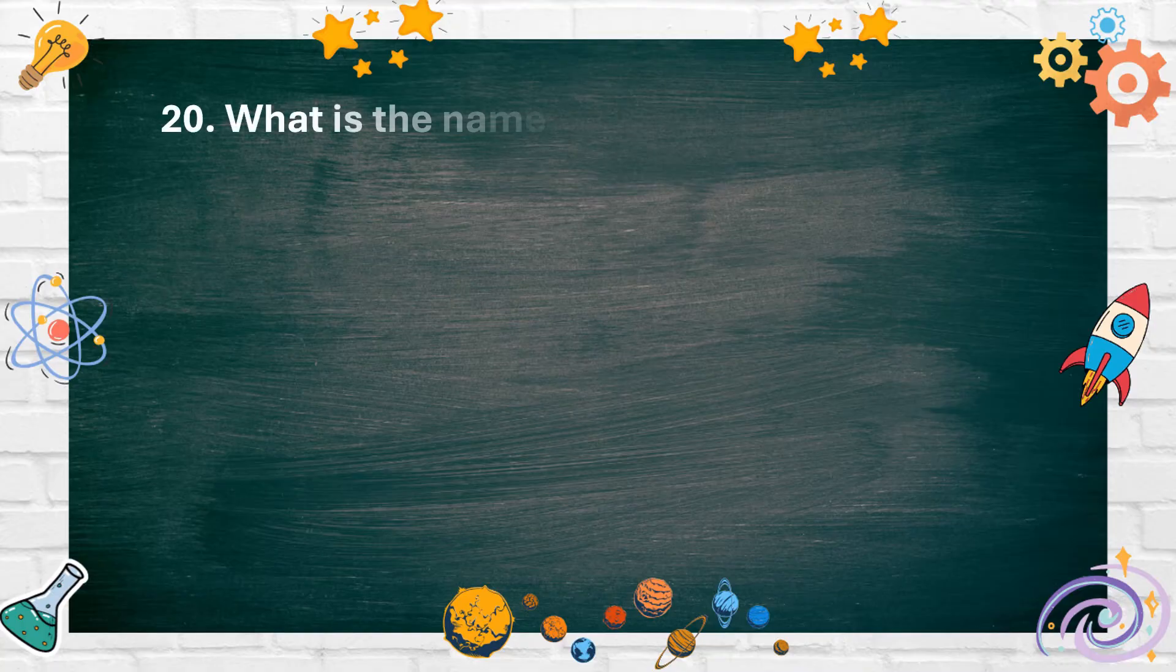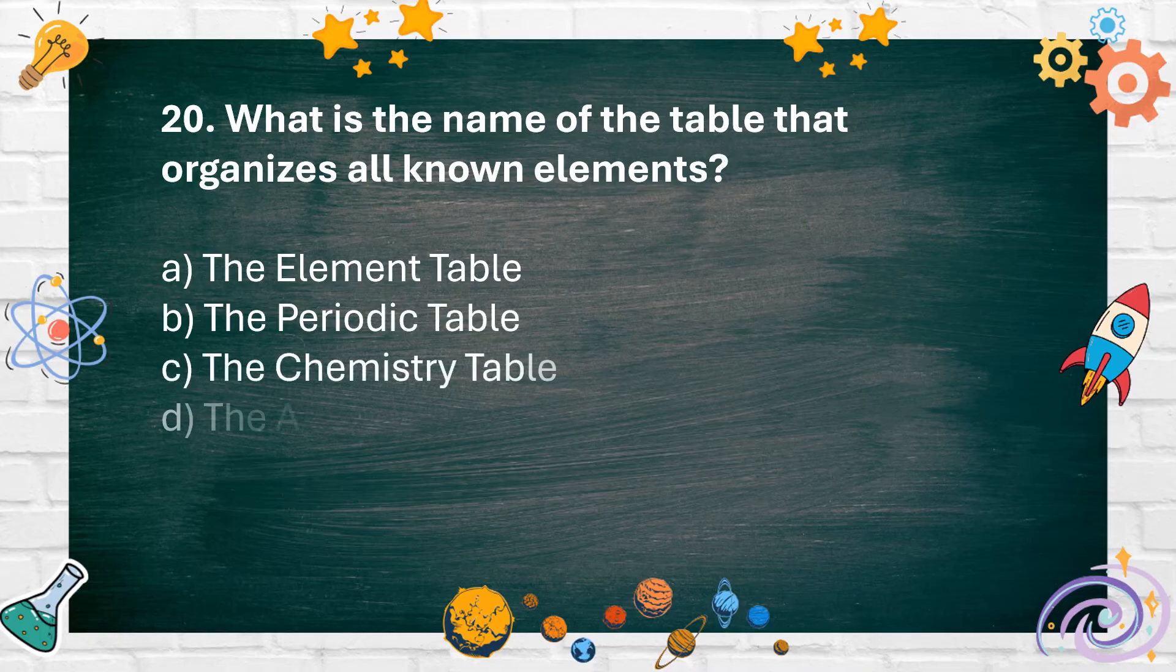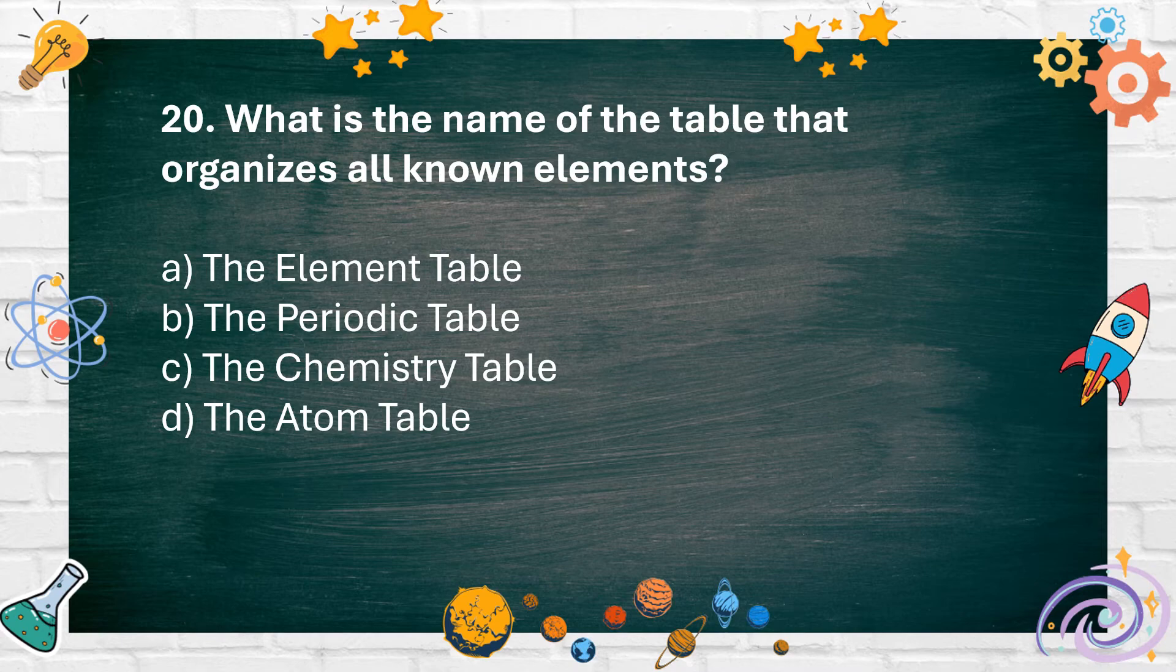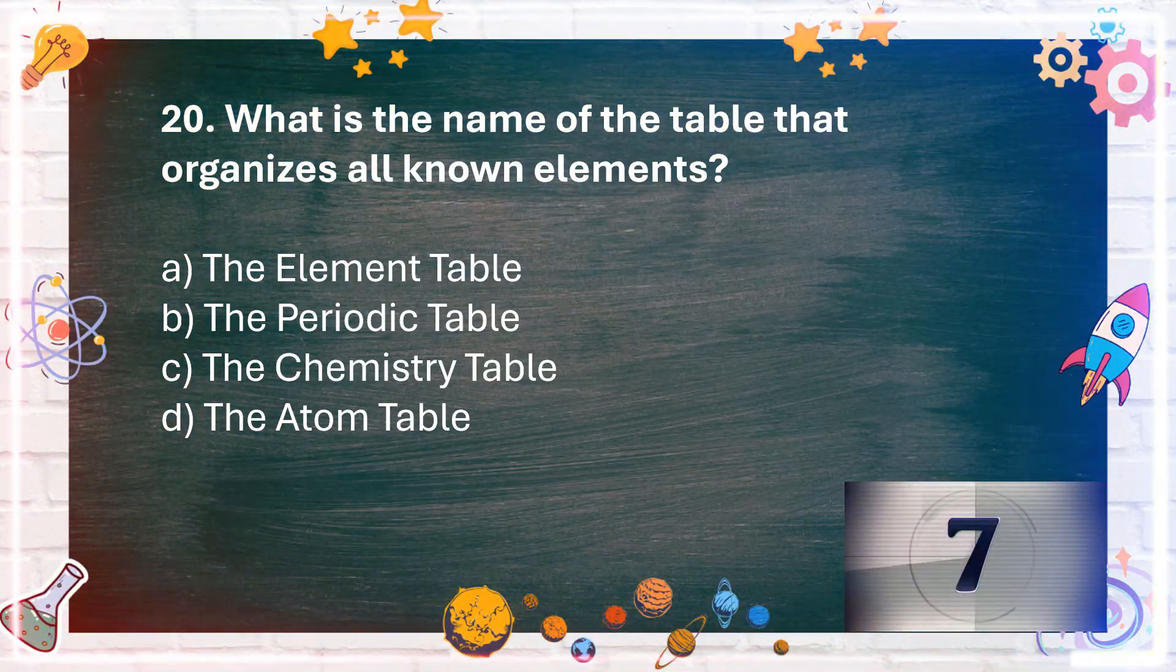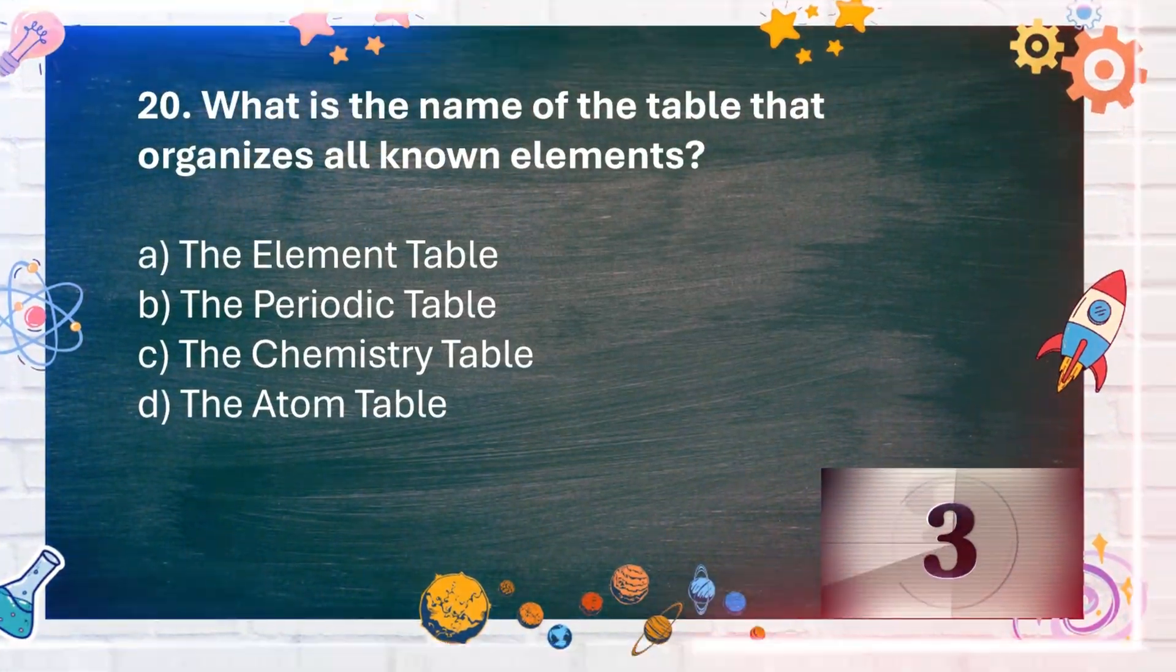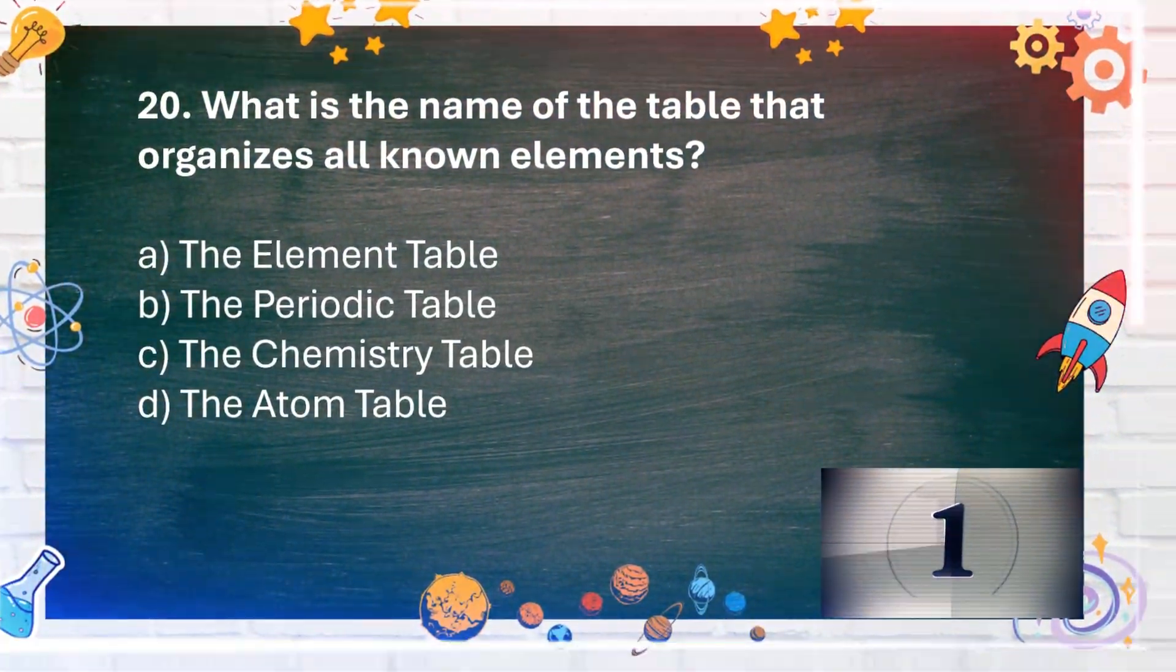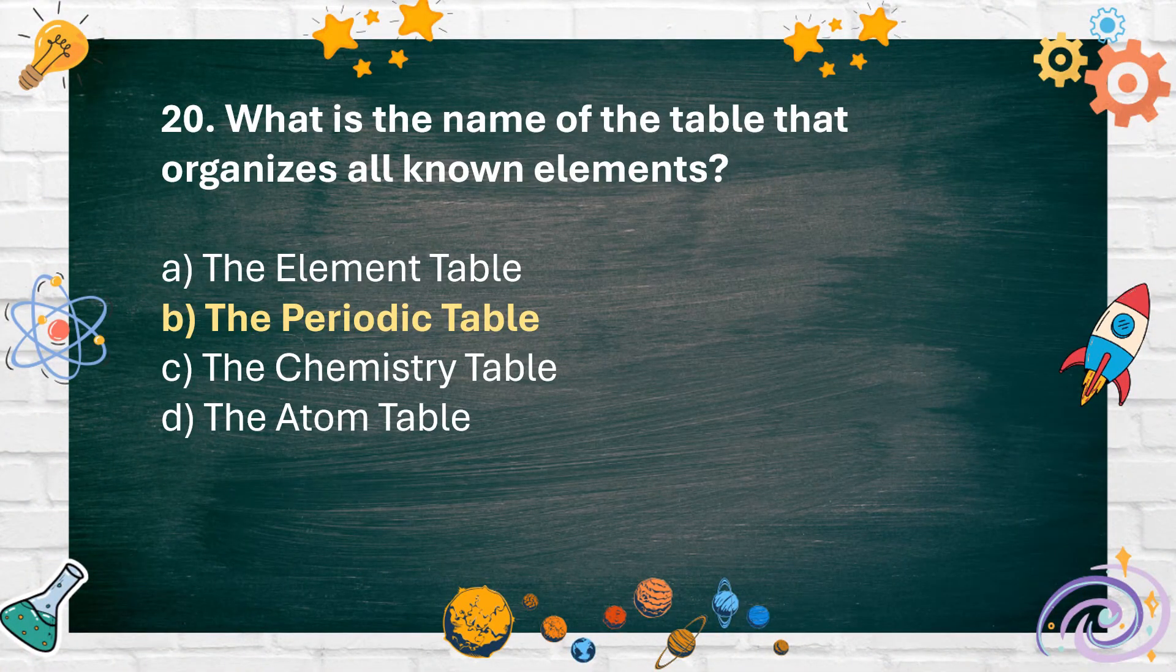Number 20: What is the name of the table that organizes all known elements? A. The element table, B. The periodic table, C. The chemistry table, D. The atom table. The answer is B. The periodic table.